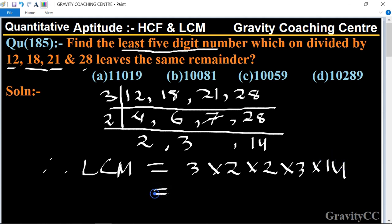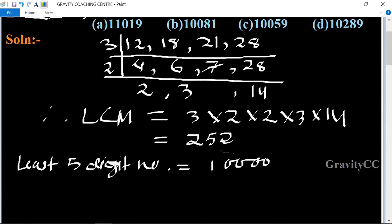And their product equals 252. So 252 is divisible by these numbers. Now we will multiply 252 by such a number that it becomes near 10,000. We get 10,080.